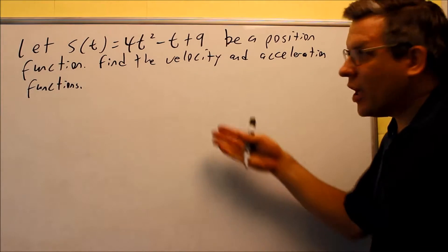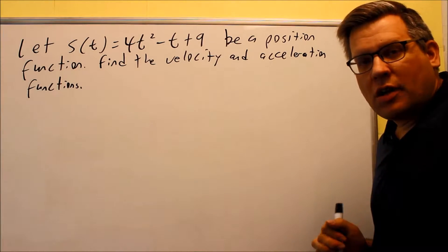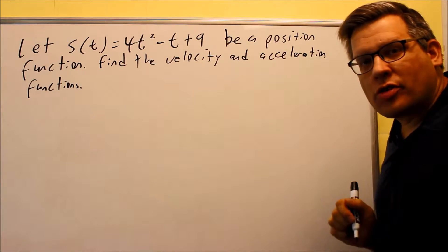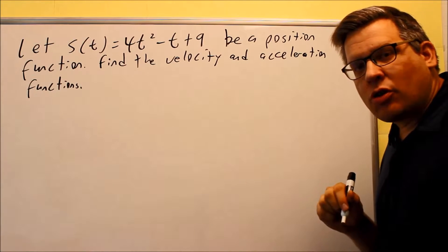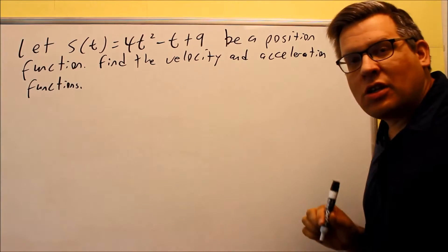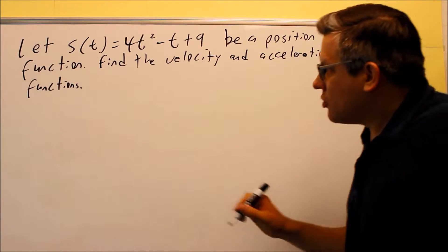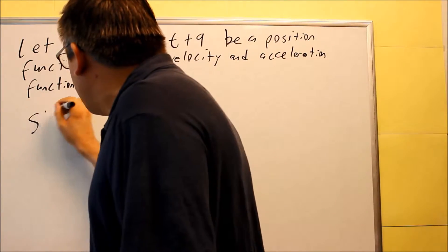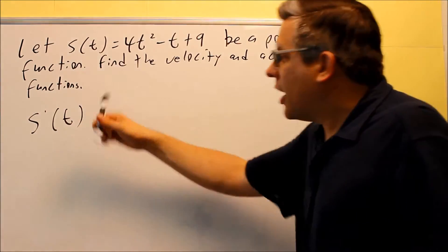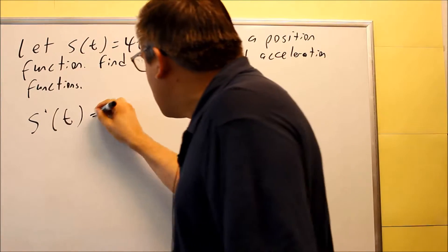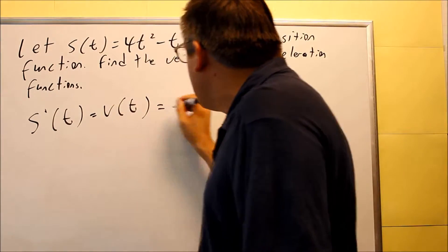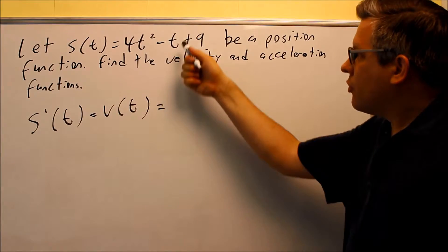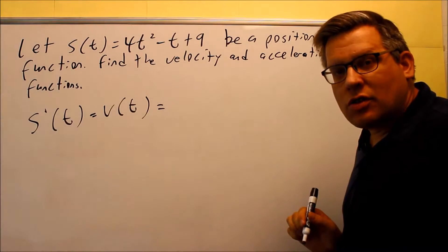For our first example, we have a position function that we're given. We want to find the velocity and acceleration functions. As we just mentioned earlier, if you want to find the velocity, that's going to be the derivative of position. So we're going to show this. S'(t) is the same thing as V(t). If I take the derivative of this, that'll give us our velocity function.